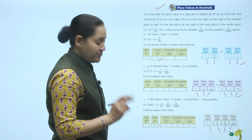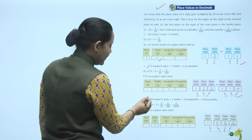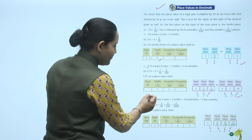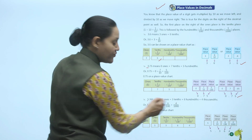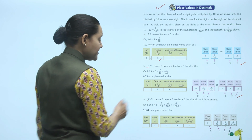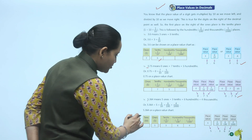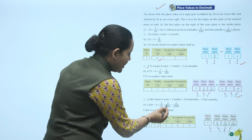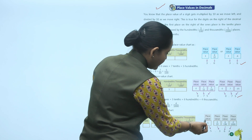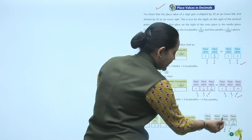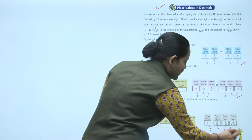5.364 means 5 ones, 3 tenths, 6 hundredths, and 4 thousandths. We write it as 5 plus 3 upon 10 plus 6 upon 100 plus 4 upon 1000. On the place value chart: ones place has 5, tenths has 3, hundredths has 6, thousandths has 4.